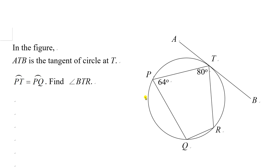Okay, in the figure ATB is the tangent of circle at T, and PT equals PQ. Find angle BTR.